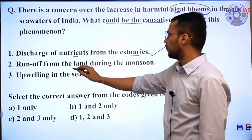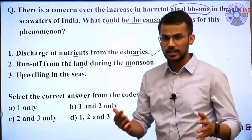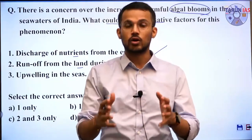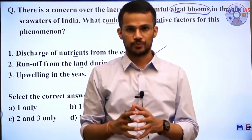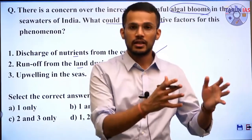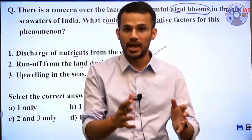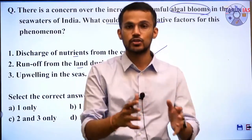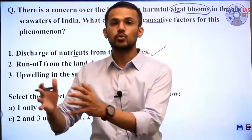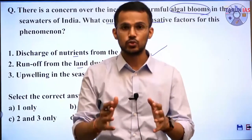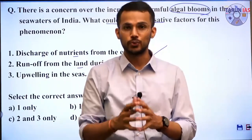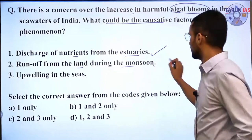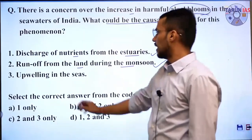The second statement is: runoff from the land during monsoon. Whenever monsoon rain occurs, there is an increase in water volume in rivers, resulting in excessive flow of water from land to sea. Whenever there is flow of water from land to sea, nutrients are carried towards the sea, which may lead to increased availability of nutrients and trigger algal blooms in sea waters. So the second statement is also correct.